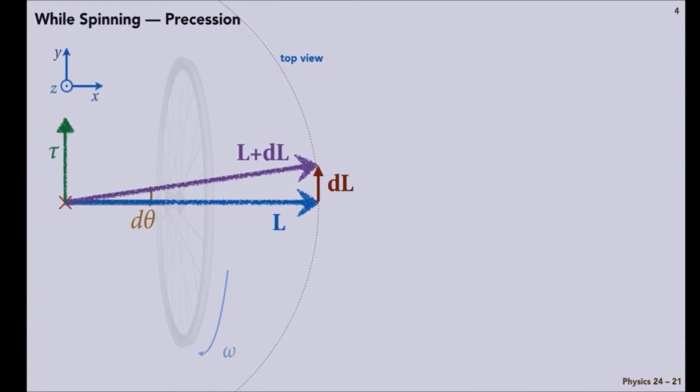that expression says that dL has to be parallel to the torque. So L has to get a component dL like that. So if I add up L plus dL, then I get the purple, because blue and red make purple.